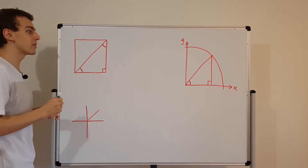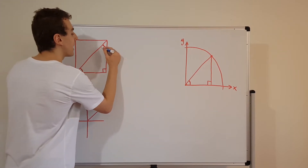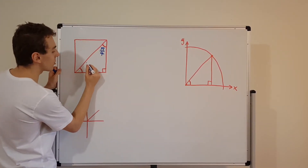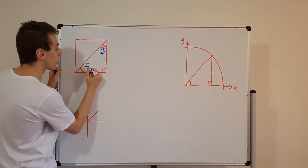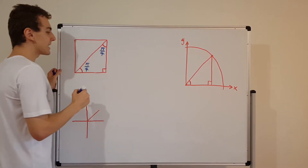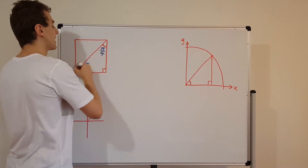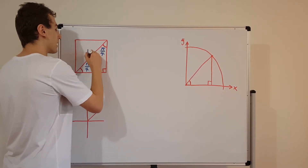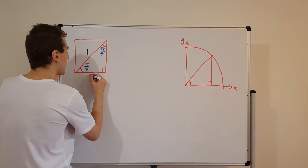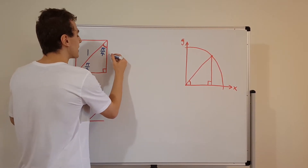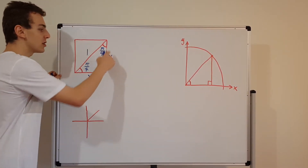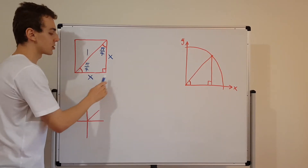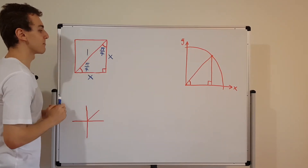I'm not going to write 45 degrees — I'm going to write pi on 4 radians. I'm also going to do that over here: we have pi on 4 radians. I'm going to set this side length, this hypotenuse of the right-angled triangle, equal to 1. And I'm also going to label the two equal legs as x, because this is an isosceles triangle so these two lengths have to be the same.